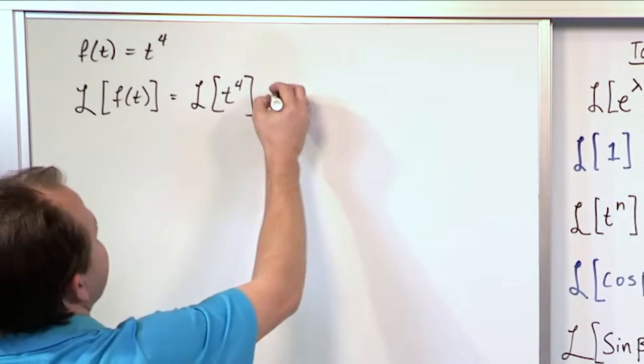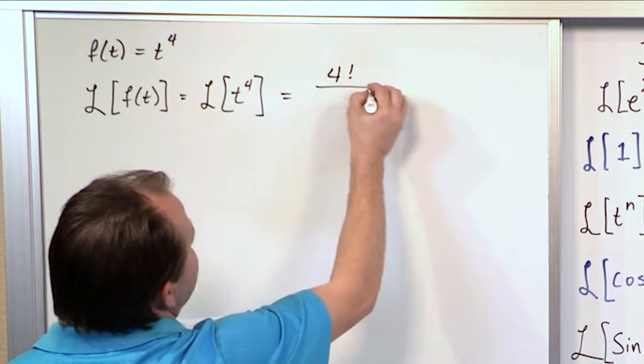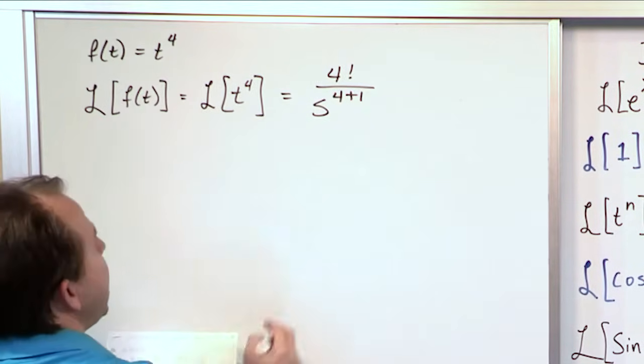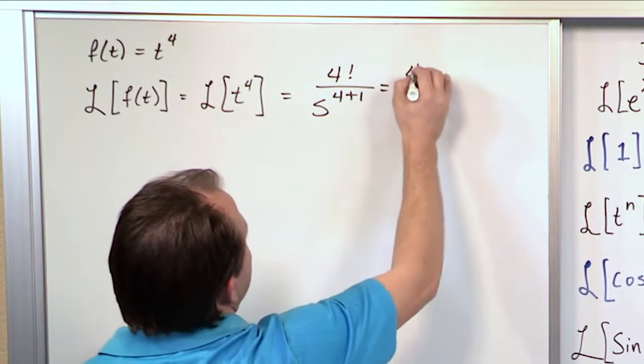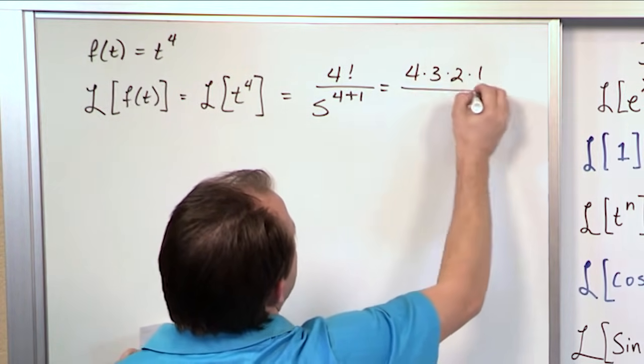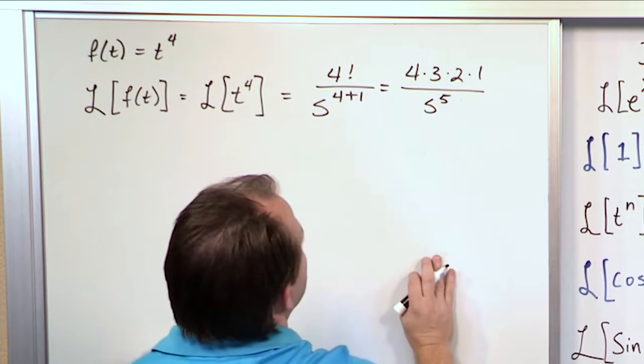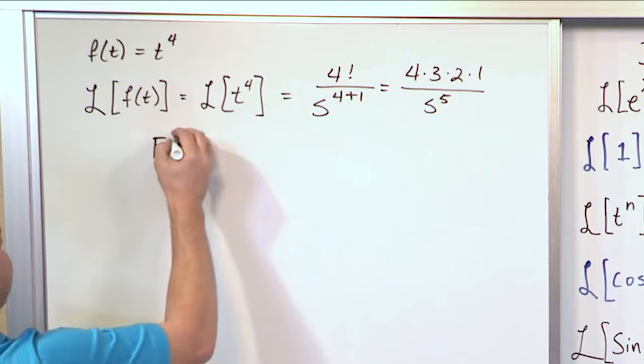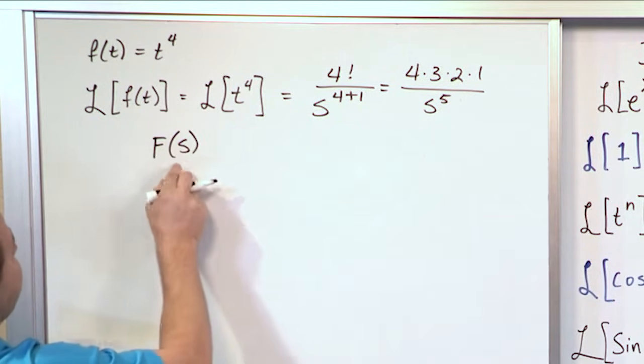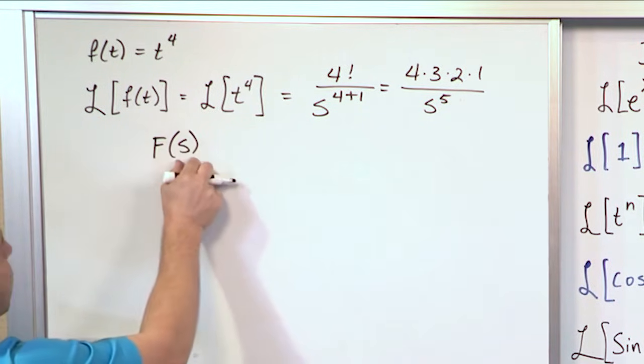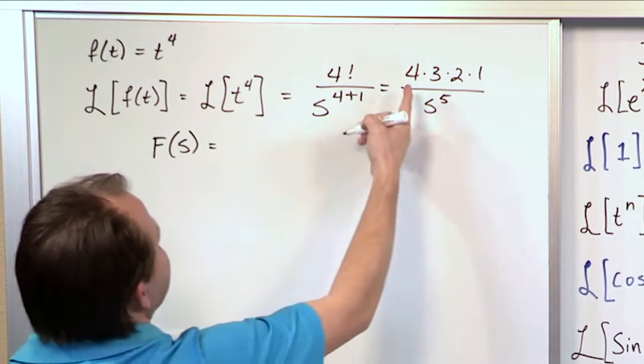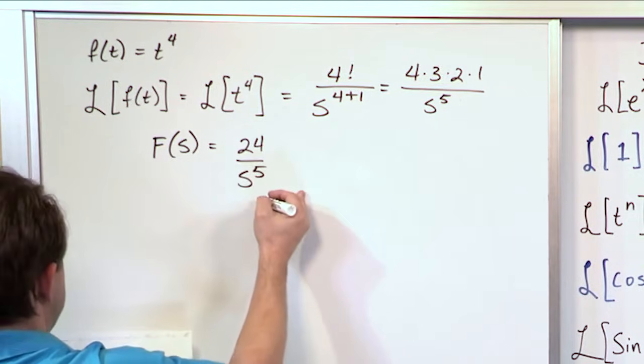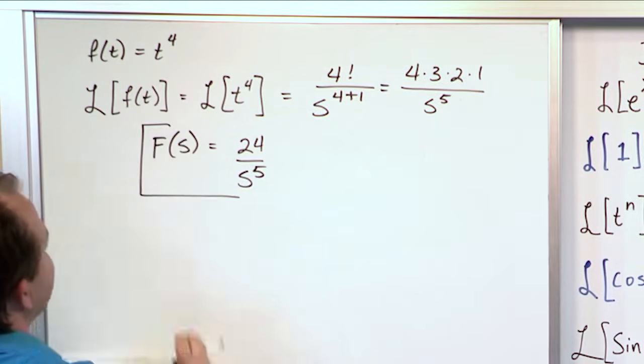So you have 4 factorial over s to the 4 plus 1. And then 4 factorial, you should know, is 4 times 3 times 2 times 1 over s to the fifth power. And so what you're going to get is capital F, which is a function of s, which represents the Laplace Transform of the function of f transformed into the s domain. 4 times 3 is 12 times 2 is 24 over s to the fifth. And that's what you would circle on your test.